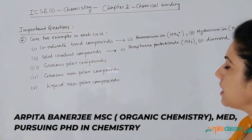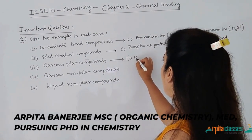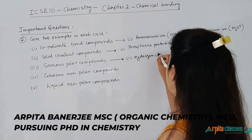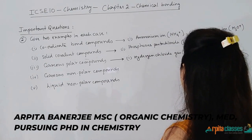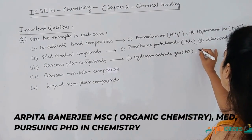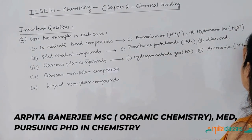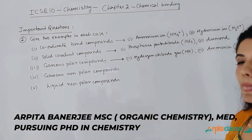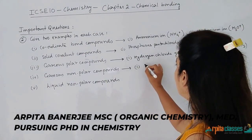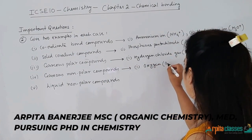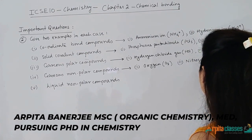For gaseous polar compounds, the first example is hydrogen chloride gas (HCl) and the second is ammonia gas (NH₃). For gaseous non-polar compounds, we can write oxygen, which is non-polar, and nitrogen, which is also non-polar.